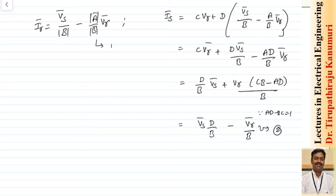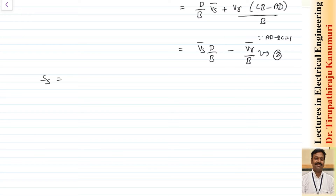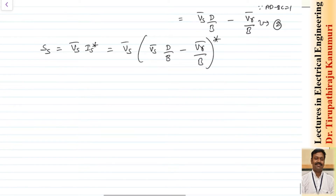Now the sending end apparent power Ss = Vs × Is*. Substituting Is from equation 2: Ss = Vs × conjugate of [(D/B)·Vs − Vr/B]. The conjugate means we take the angle as a negative angle. The reason for taking the conjugate when multiplying voltage and current is to obtain the angle difference between voltage and current — this is why S = V·I*. A reference to the basic electrical engineering lectures explains this in detail.